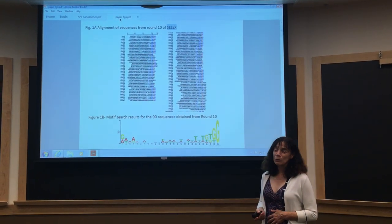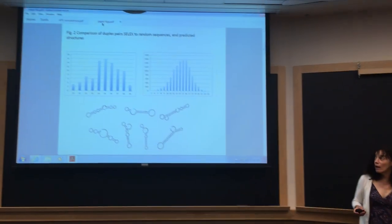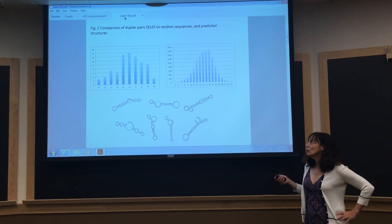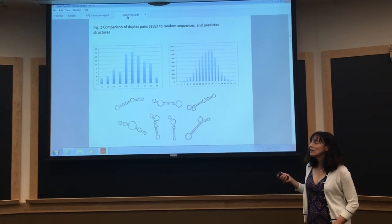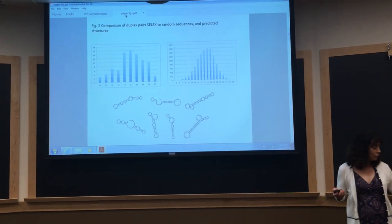So we used a method called SELEX, and then we did some theoretical calculations. And we find that C3PO likes to bind to RNAs or nucleic acids that have these stem-loop structures or a mix between single-stranded and double-stranded.